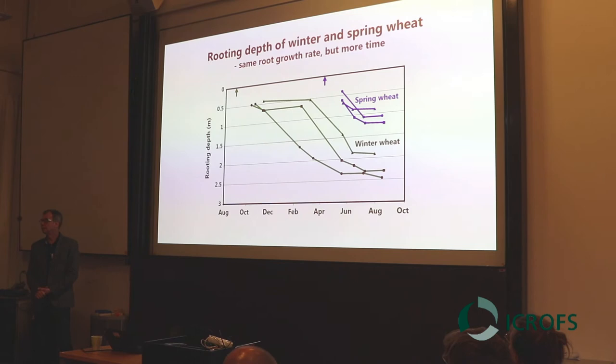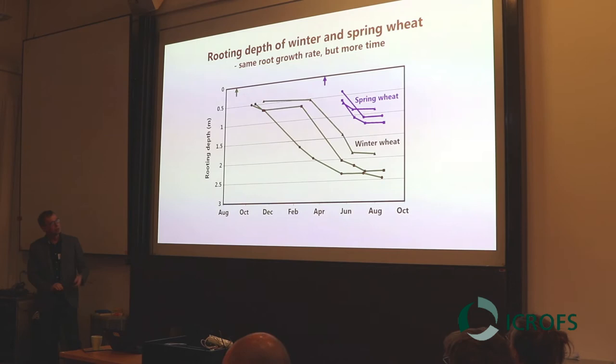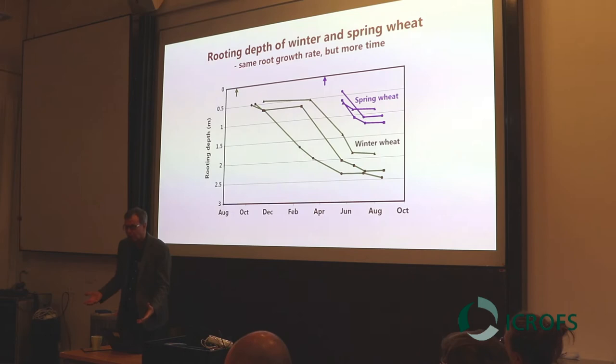Here is a comparison from a three-year study of winter wheat and spring wheat. What you see on these lines are simply estimates of average maximum rooting depth over time. When we look at these depth development rates, the spring and winter wheat have exactly the same development rate in terms of millimeters per day per degree. But the winter wheat has so much more time to develop that it reaches approximately twice the root depth of the spring wheat, and this allowed the winter wheat to use a lot of deep nitrogen that was clearly out of reach for the spring wheat.